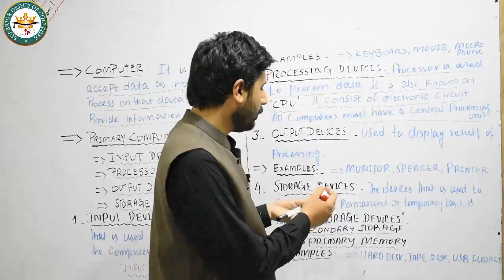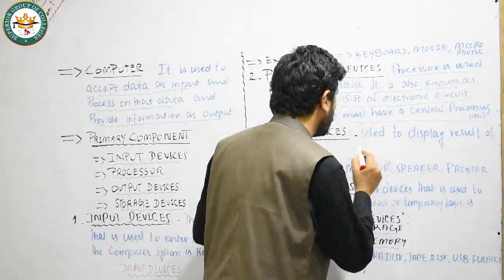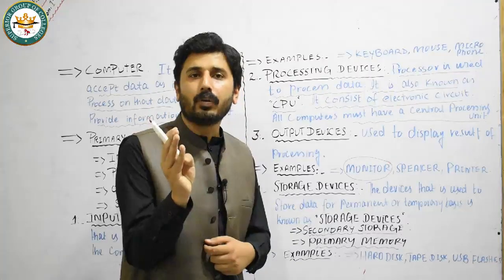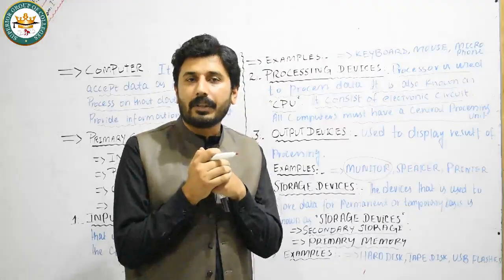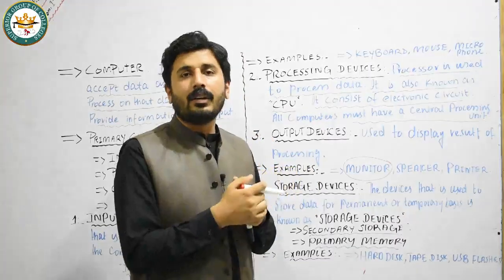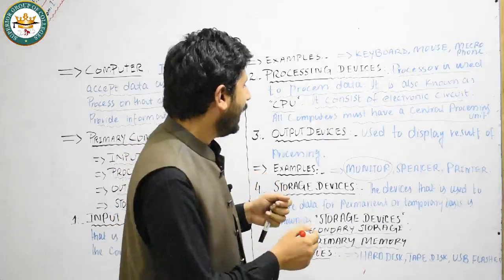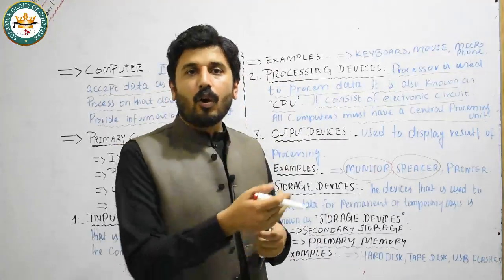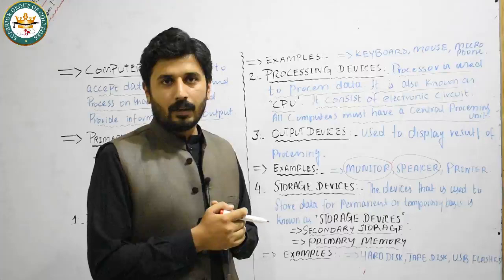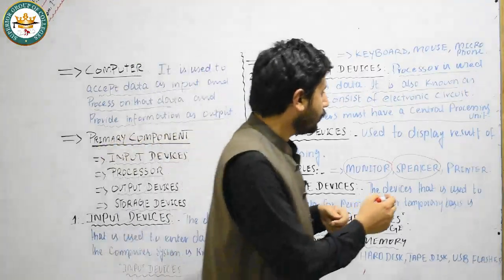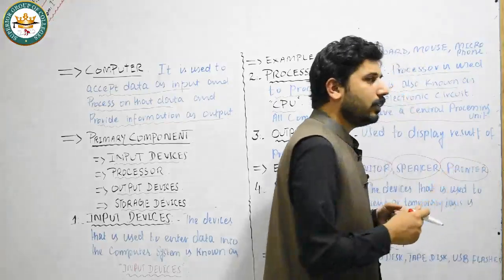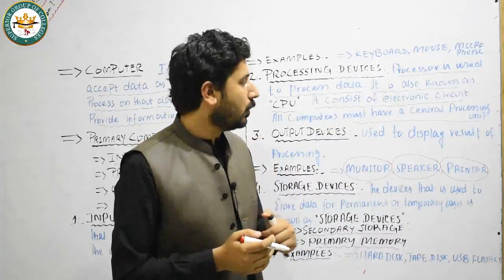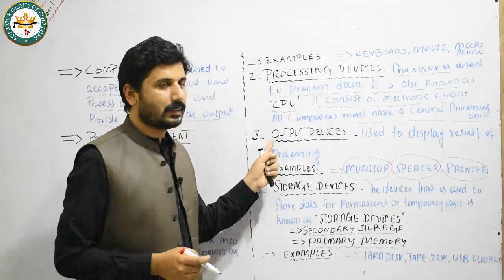Examples of output devices: the first output device is the monitor, which is used to see and display text, images, and videos on the screen. The next one is the speaker, which is used to receive audio or voice output from the computer system. The last one is the printer, which is used to produce a hard copy for the user.